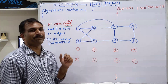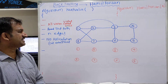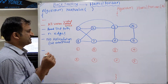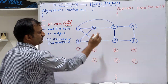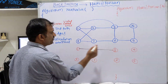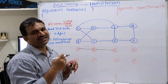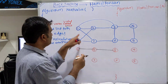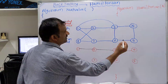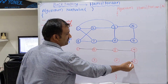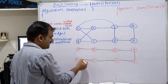Let us see with an example graph and generate a Hamiltonian Cycle using backtracking, starting from vertex 1. We visit 1 to 2, 2 to 3, checking for an edge before traveling. There is an edge 1→2, 2→3, 3→4, 4→5, 5→6, 6→7, and 7→8.